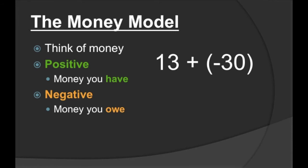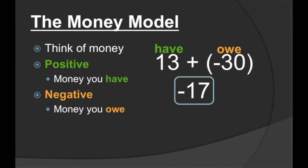How about 13 plus negative 30? 13 is positive, so we have 13. Negative 30 — it's negative, so we owe it. We have 13 and we owe 30. We owe more than we have, which means our answer is going to be negative. If we pay back the 13 that we have, we're still going to owe 17. So our answer is negative 17.